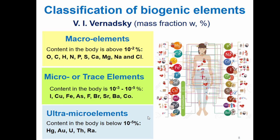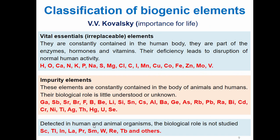Then we have ultra microelements. Classification of biogenic elements by Kowalsky. His main criteria was the importance of these elements for life. First class is called vital essentials or irreplaceable elements. These elements are constantly contained in the human body; they are part of the enzymes, hormones, and vitamins. Their deficiency leads to disruption of normal human activity.